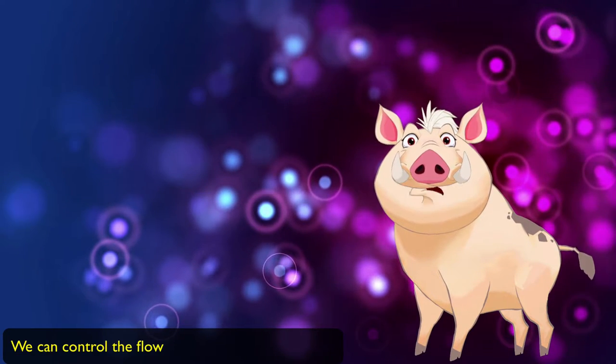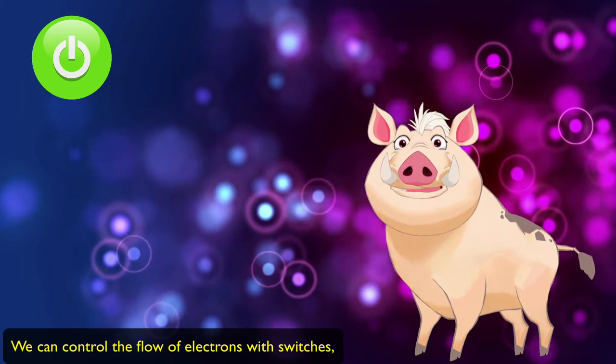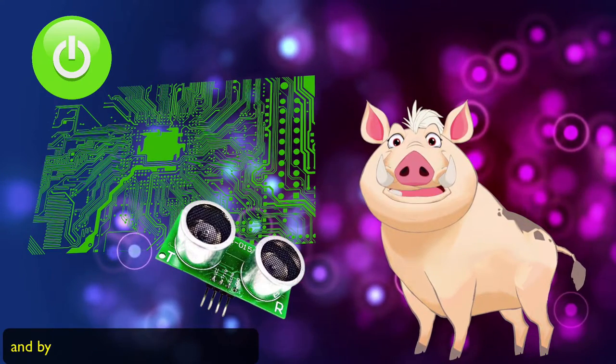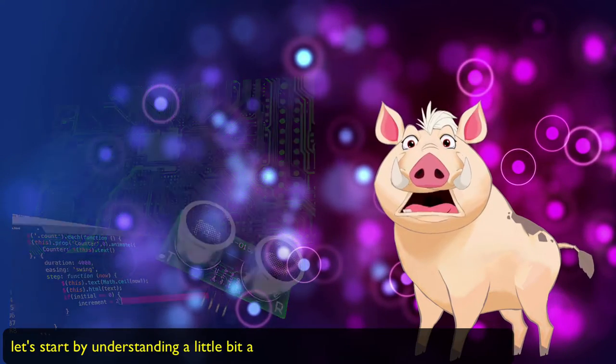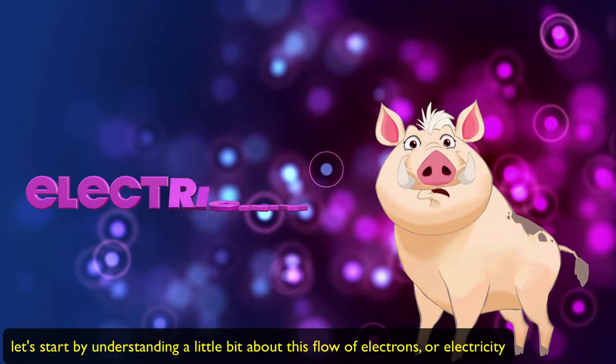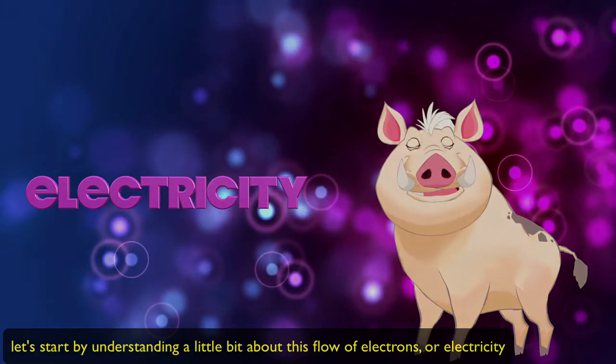We can control the flow of electrons with switches, with circuits, with sensors, and by writing computer programs. Let's start by understanding a little bit about this flow of electrons, or electricity.